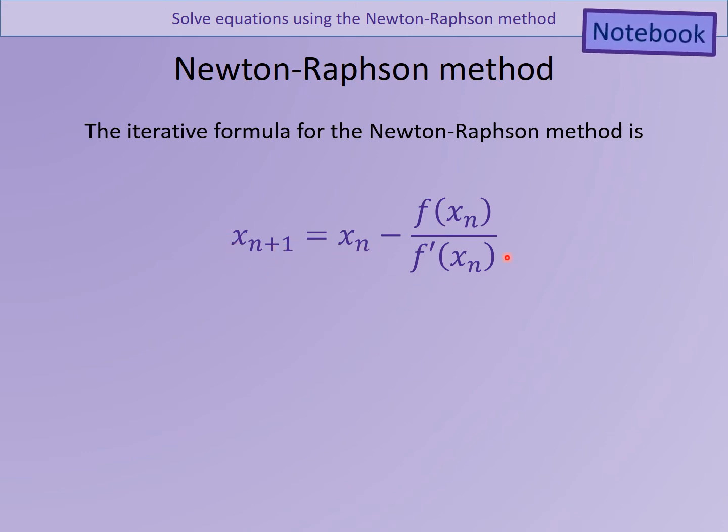So you're taking your function, you're differentiating that function, and you're forming a quotient like that. And then you can just stick your, whatever your first approximation is into those three places, and out will pop your next approximation. That next approximation, you can then put in there, there and there, and so on. So you get an iterative formula like that.